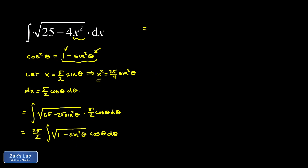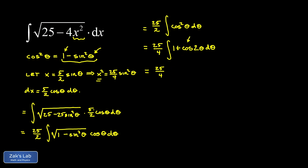Taking advantage of this trig identity, we rewrite 1 minus sine squared as cosine squared. Taking the square root gives just cosine theta. Now we have cosine theta times cosine theta, giving cosine squared theta. This is a classic trigonometric integral requiring the power reducing identity: cosine squared equals 1 half times the quantity 1 plus cosine of 2 theta. Pulling the 1 half out front gives 25 fourths, and now each term is quickly integrable.